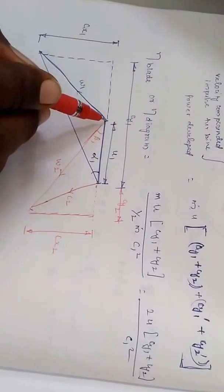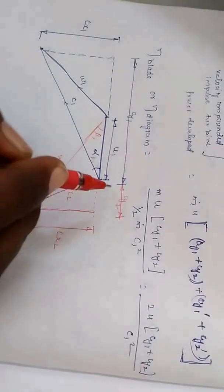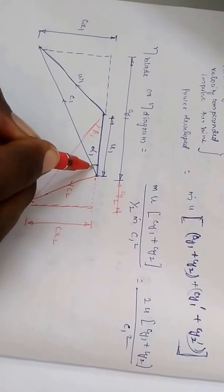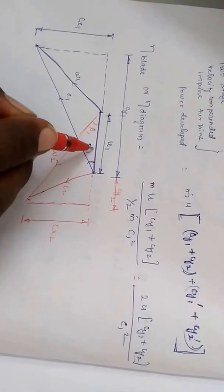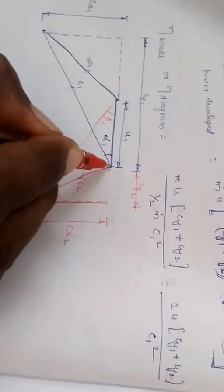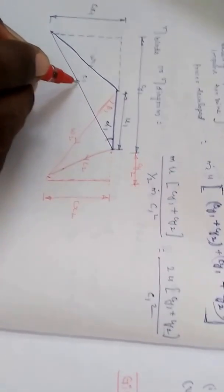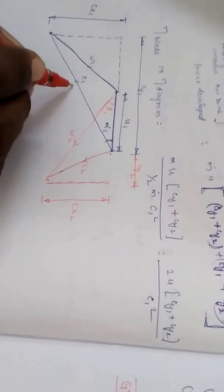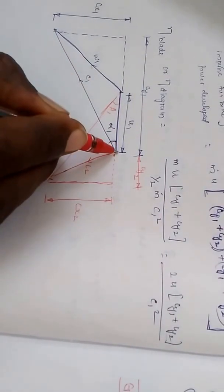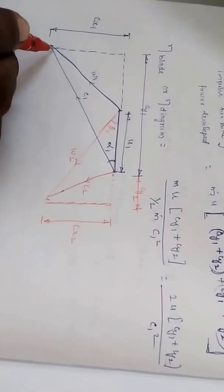If you have considered a scale of 1 to 100 or 1 to 50, draw the horizontal line for blade velocity at the suitable centimeter length. Then from the end of that line, draw a straight line at an angle of alpha1, the nozzle angle — for example, 20, 25, or 30 degrees as specified in the problem. This line represents the inlet velocity C1 of the fluid. If C1 is 1200 or 1600 meters per second, using a scale of 1 to 100, this will be 12 centimeters.